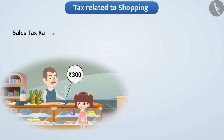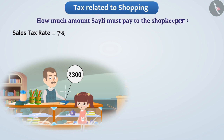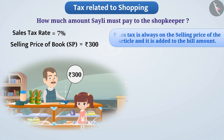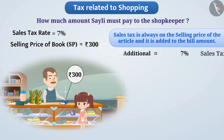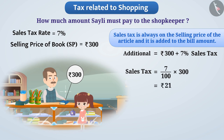If the sales tax rate is 7%, how much must she pay the shopkeeper? The selling price of the book is 300 rupees. Sales tax is always calculated on the selling price and added to the bill. So the additional 7% sales tax on 300 rupees = (7 ÷ 100) × 300 = 21 rupees.